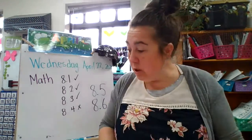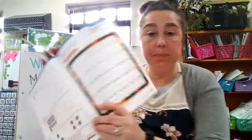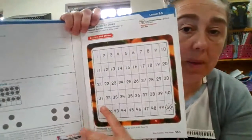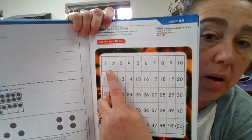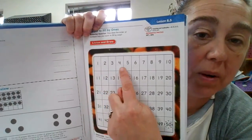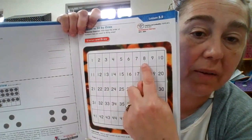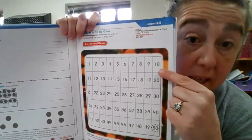So what's interesting, if you look at it, it sort of repeats every time: 1, 2, 3, 4, 5, 6, 7, 8, 9, and then a 10.